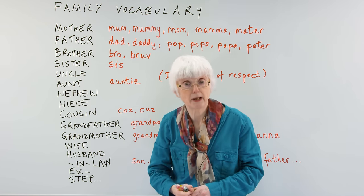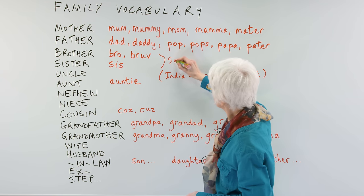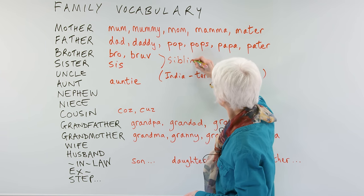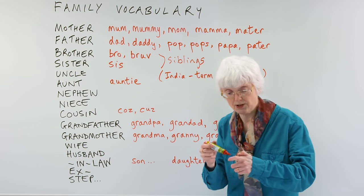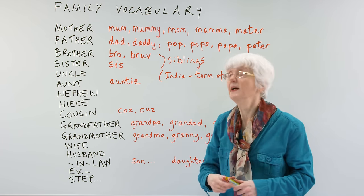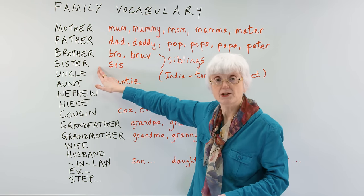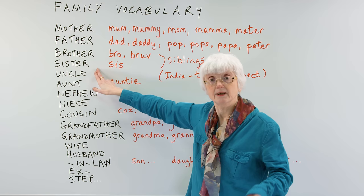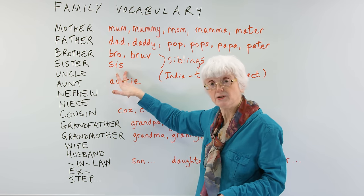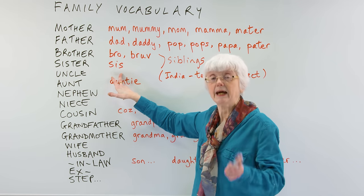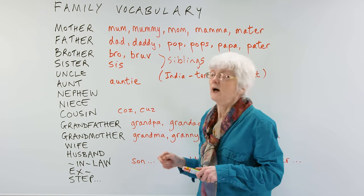These are called siblings, by the way — siblings. If you have brothers and sisters, they are called siblings. So a sister — sister is the standard word — can be shortened to sis in an informal way.